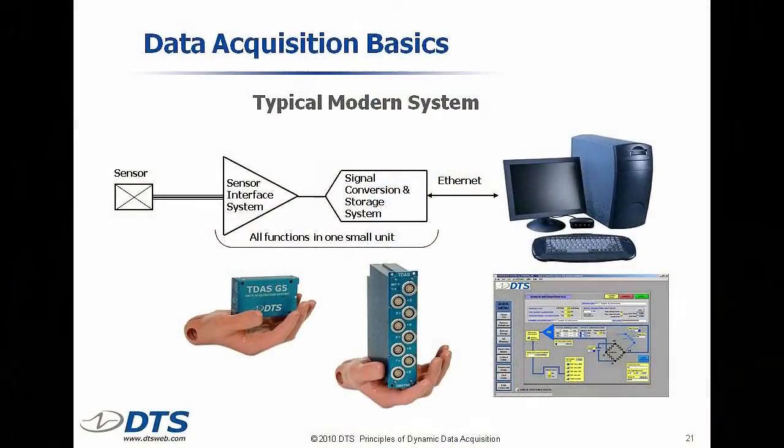A typical modern system has all of the functions of the sensor interface, the signal conversion and storage, and the communications built into the same box. Some people call that a black box — we make ours blue, but it's all the same stuff. You've got a bunch of electronics and you talk to it with a comlink, and you don't really do anything with the hardware. It kind of fades into the background. You plug sensors into it, you talk to it with a PC, and you never really see the electronics.